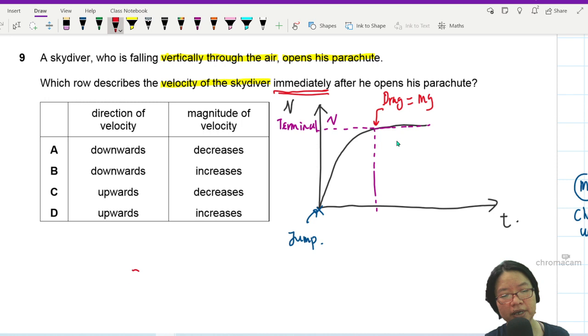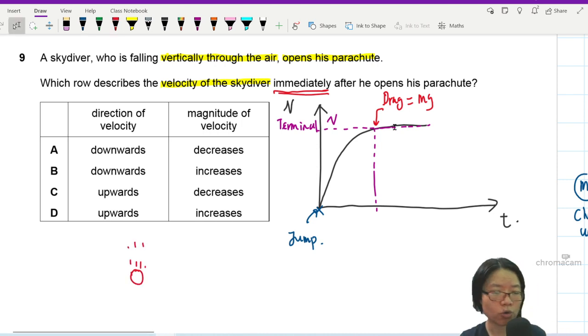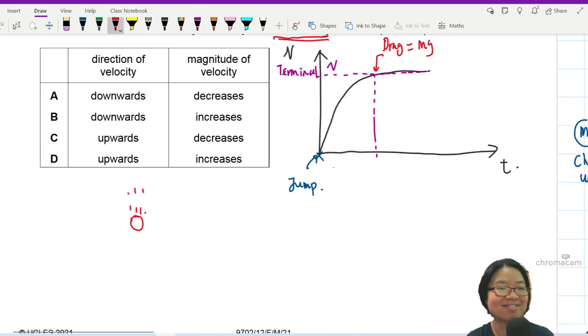As something is falling down, whether it's a skydiver or a bowling ball or your hopes and dreams—joking—eventually it will reach a constant speed because the weight will cancel off with the drag force. As v increases, drag increases.